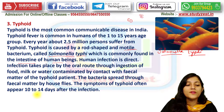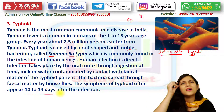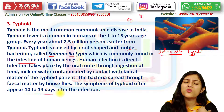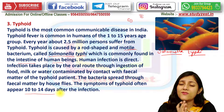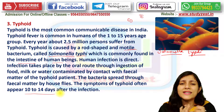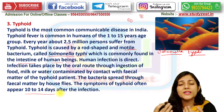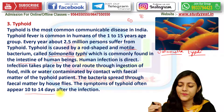The symptoms of typhoid often appear 10 to 14 days after infection. This is dangerous because immediately after infection you don't know whether you have typhoid or not. Only after a minimum of 10 days — up to 14 days — does it become apparent that typhoid has occurred.